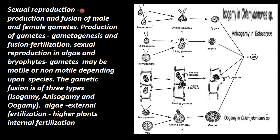Sexual reproduction involves three stages: pre-fertilization events, fertilization events, and post-fertilization events. We will see the production and fusion of the male and female gametes in sexual reproduction.